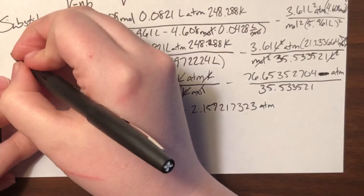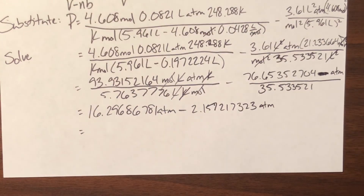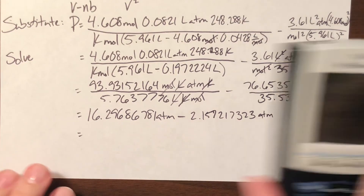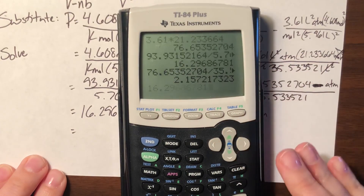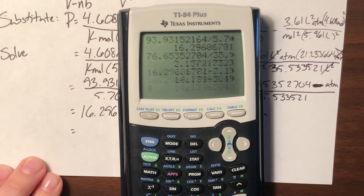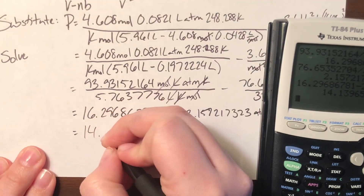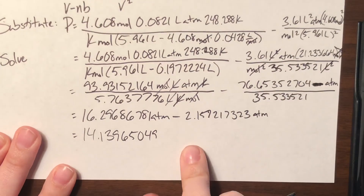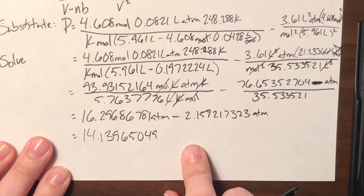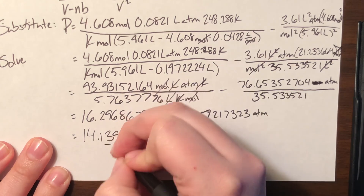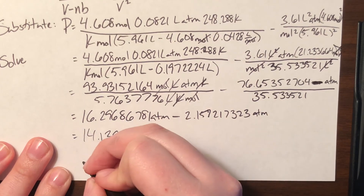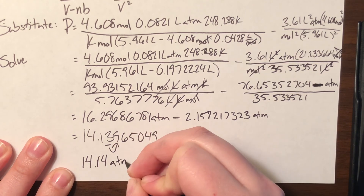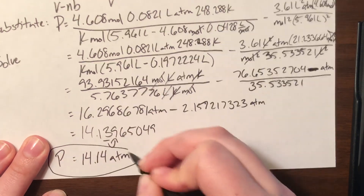Quite a while ago this turned into the solve step — I forgot to reestablish that we had moved on after substituting in. My apologies. Subtracting the 16.29 value minus 2.15 gives 14.13965049. This is long, so I'll round to the second decimal place. A 9 makes me round up, so my final boxed answer is 14.14 atmospheres. That is the final boxed answer for pressure.